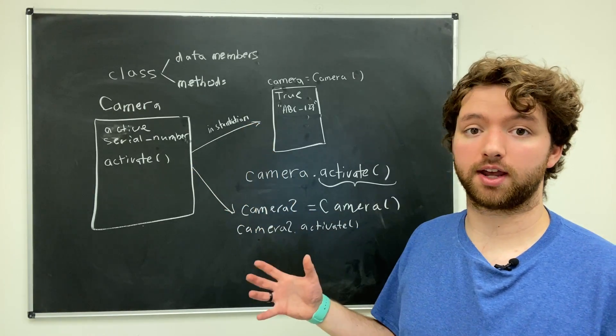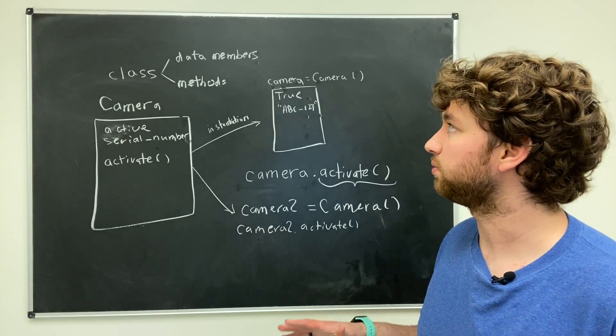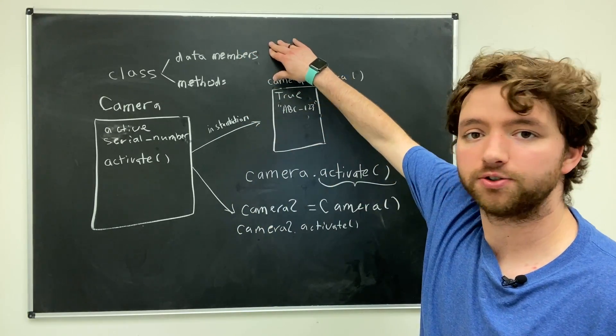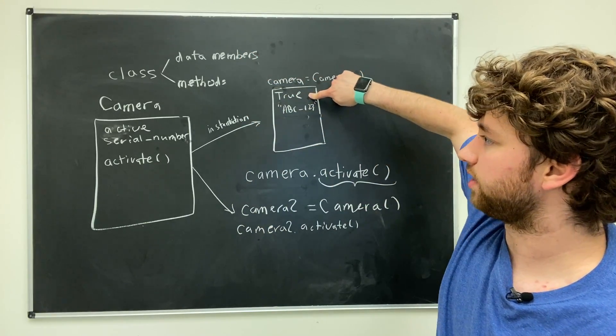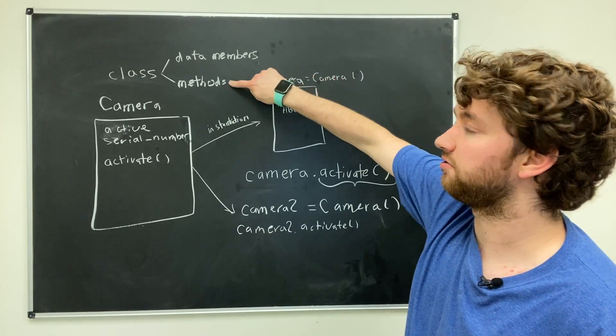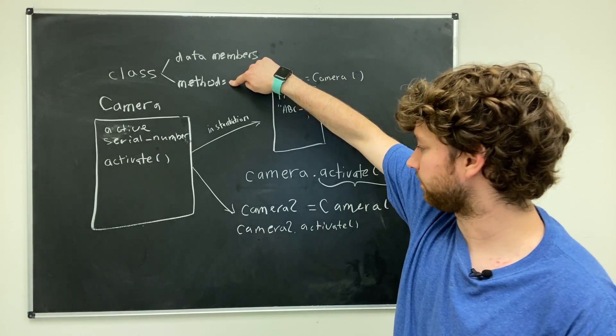In this situation, the activate refers to this camera, not this camera. Notice that the class can be used to instantiate numerous cameras.